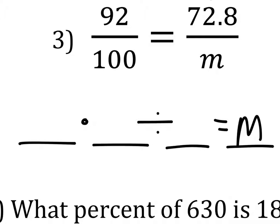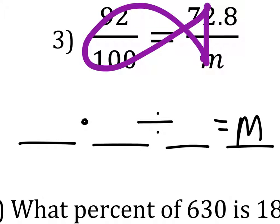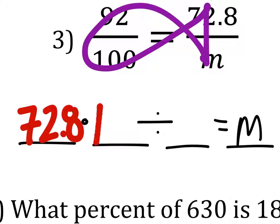So if we look right here, we can make the fish like this. So the first value in this method would take us to the 72.8 first, then the 100, then the 92, and that equals M.